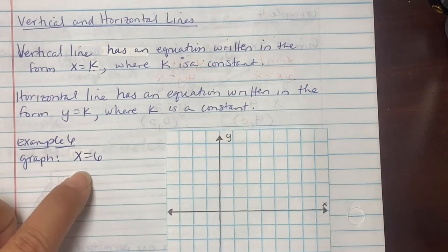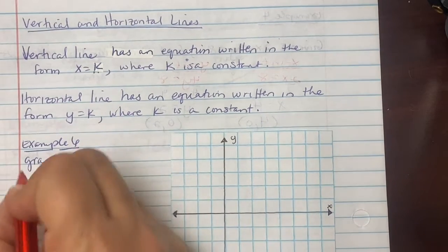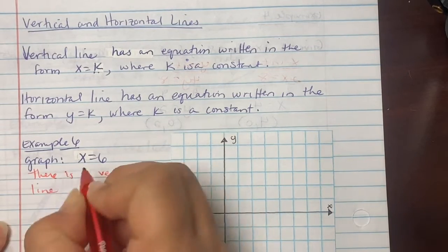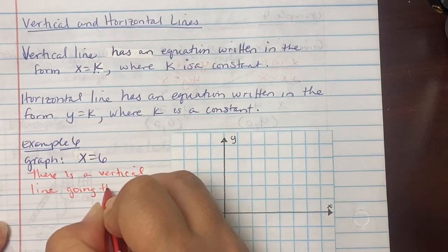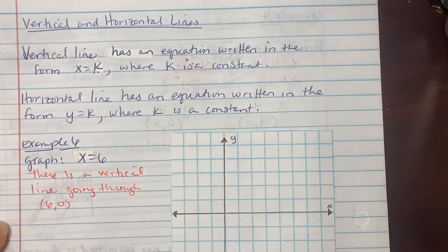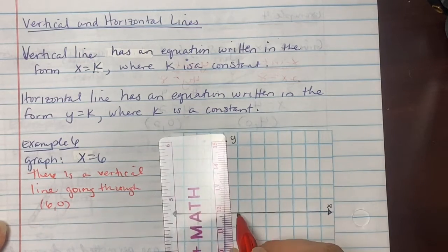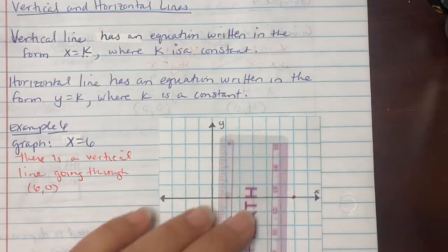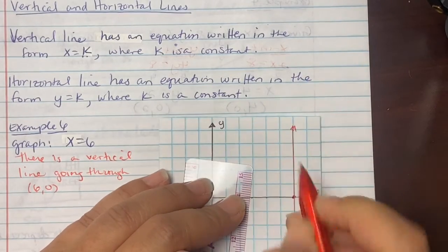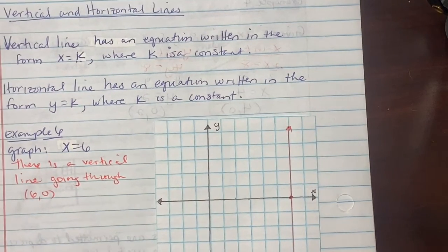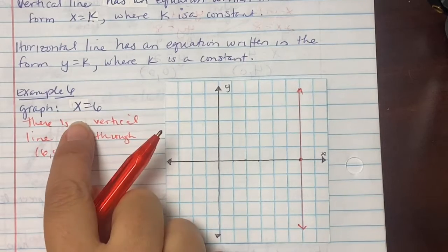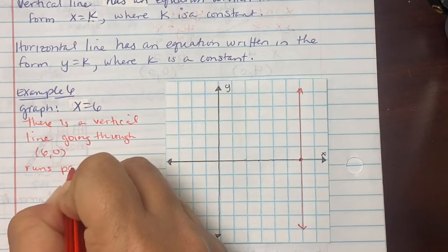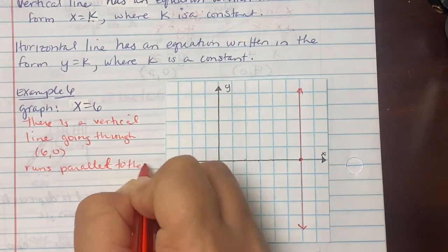So in example 6, it says graph x = 6. What does this mean? It means there is a vertical line going through (6, 0). So you put a dot at x axis, which is at (6, 0), and you draw a line straight up and down. So what happens is when it's the form of x equal to 6 or x equal to any number, it's a vertical line, which means it runs parallel to the y-axis.